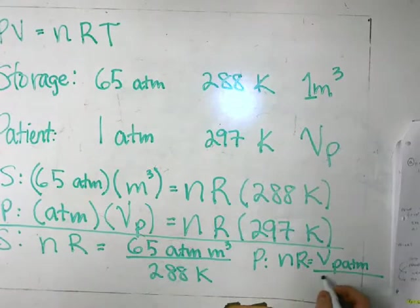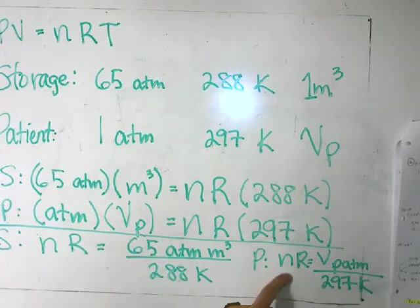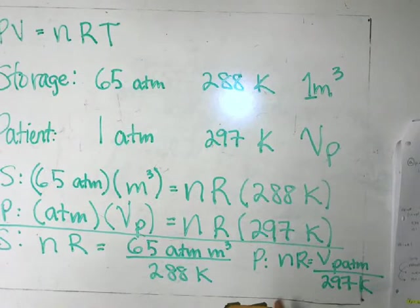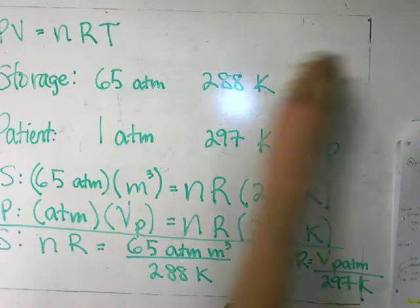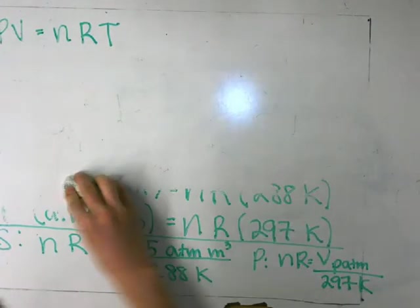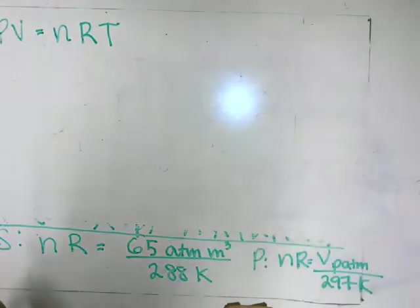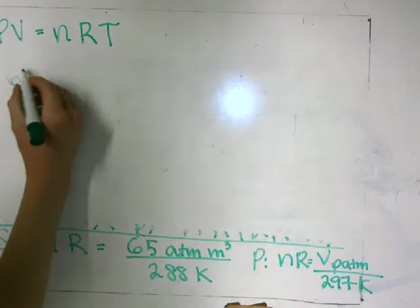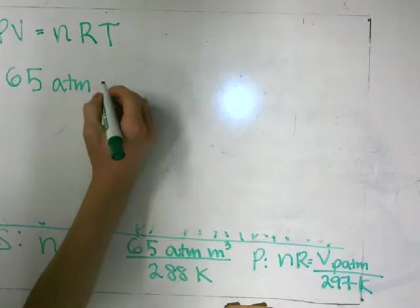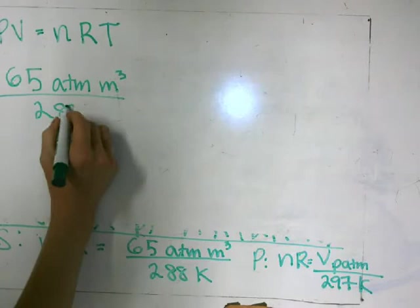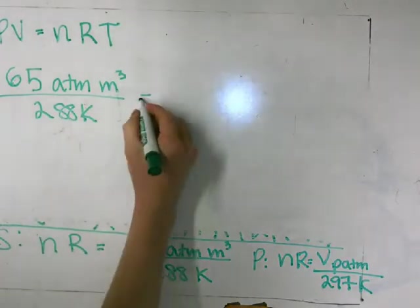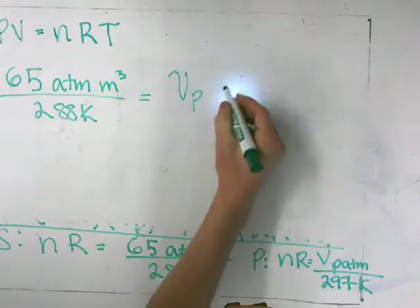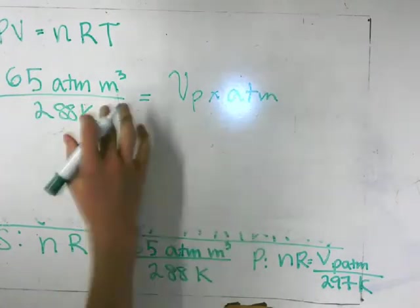So we have NR and NR in both equations. N is constant in both because the mass isn't changing — it's just volume in different aspects. Since NR is equal to that expression in the storage equation, and NR is equal to that expression in the patient equation, these two must be equal. So let's set those two equal: 65 ATM times one cubic meter over 288 Kelvin equals Vp times one ATM over 297 Kelvin. That's our main equation — we only have one variable now: the volume of the gas in the patient's room.